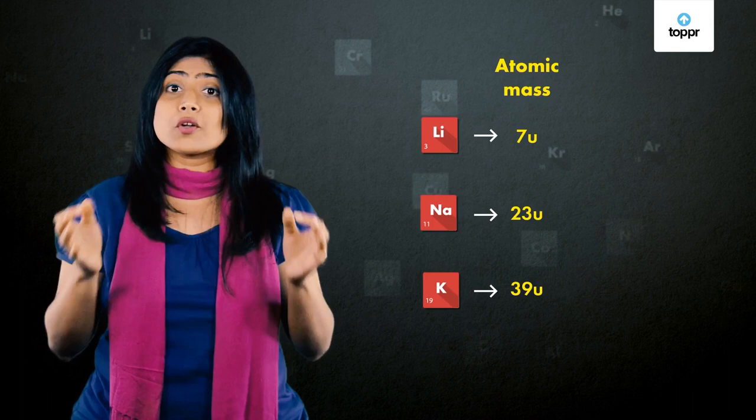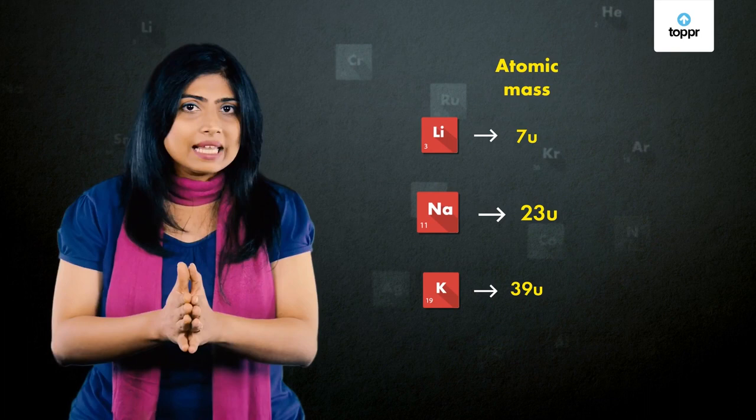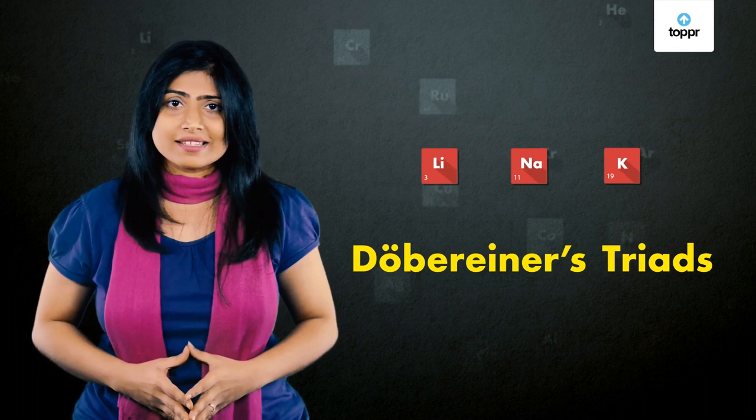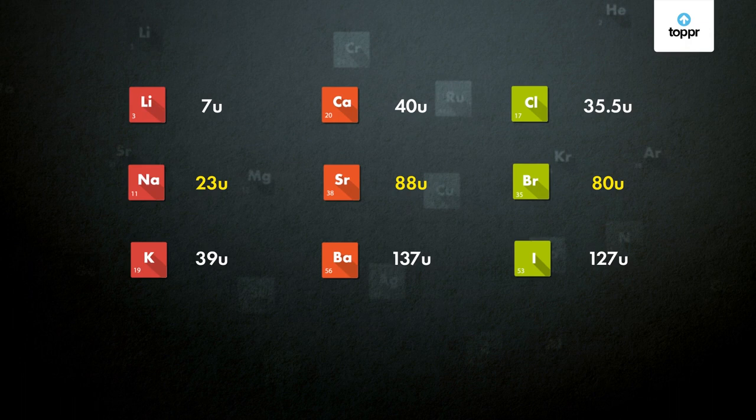Döbereiner observed that certain groups of three elements showed similar properties when arranged in increasing order of atomic masses. Most importantly, the atomic mass of the middle element was roughly the average of the other two. He defined these groups as triads — now referred to as Döbereiner's triads. The three triads identified by Döbereiner are shown here.